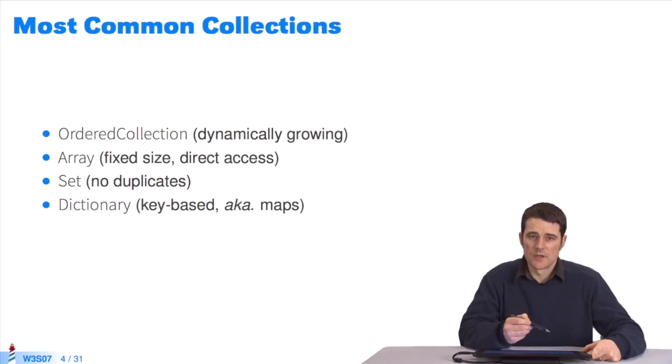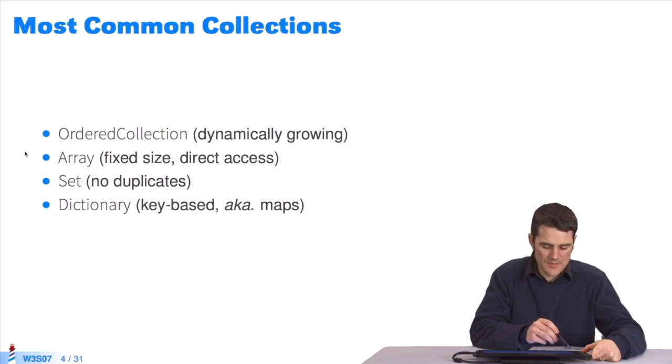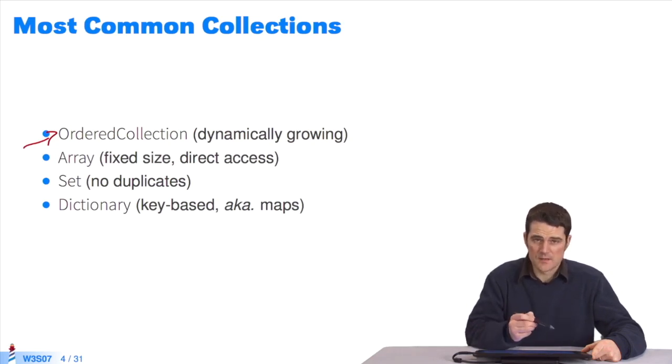Let's see some of the most remarkable and widely used collections. OrderedCollection is a dynamic collection which grows whenever you add elements in it. Array is a collection of fixed size. You can access the elements according to an index. Set contains elements without duplicates. You can't insert the same element twice. Dictionaries are hash tables. To one key is associated one value.